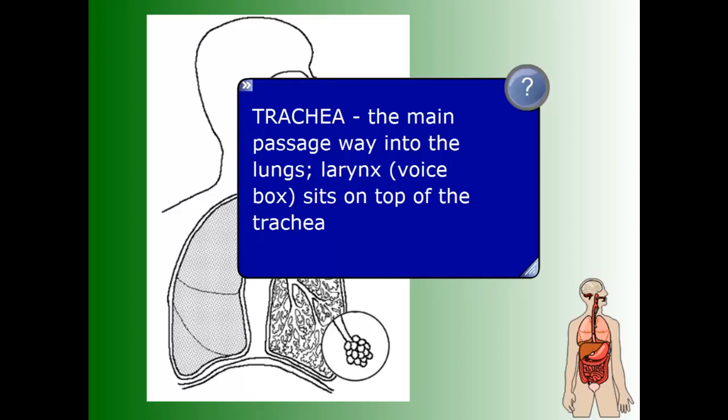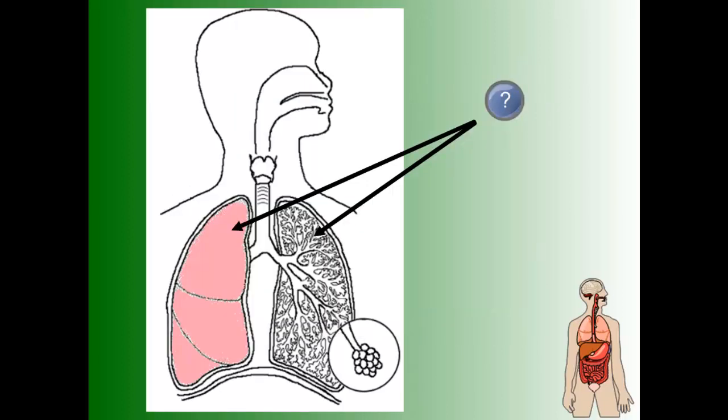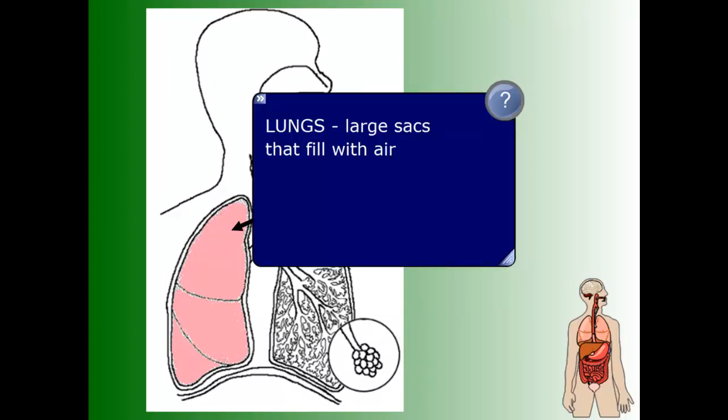On top of the trachea is your voice box, your larynx. Air will pass through the larynx, allowing you to speak and sing. Then once it passes through the voice box and trachea, it's on its way into the lungs. You have two lungs — left lung and right lung — and they're large sacs that fill with air.